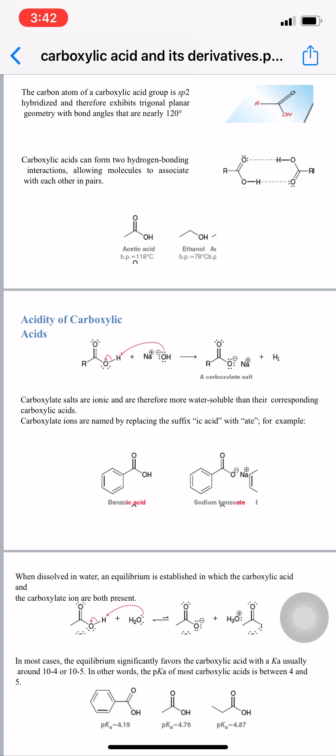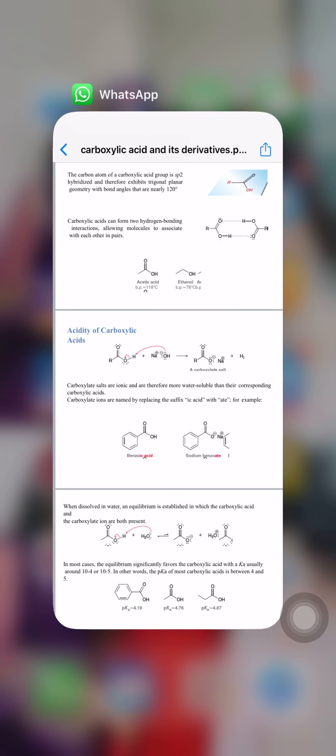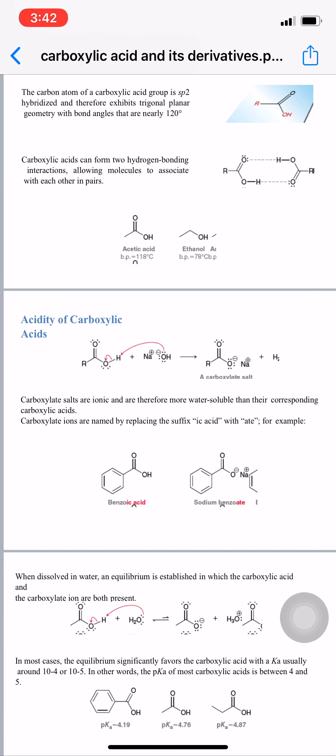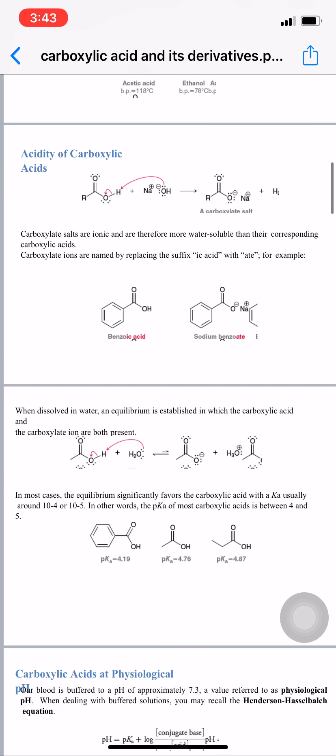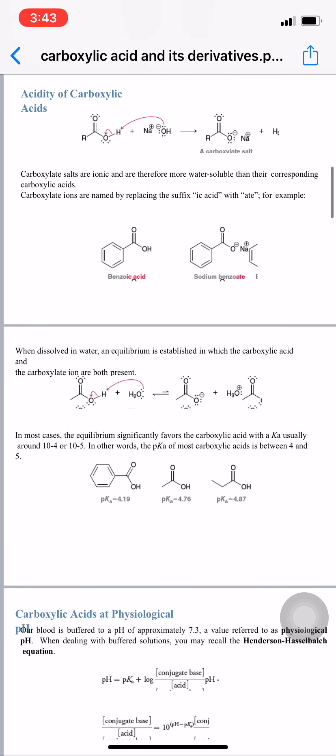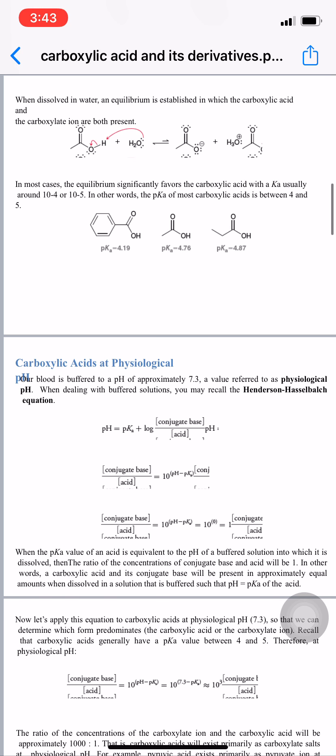When this salt dissolves in water, an equilibrium is established in which both the carboxylic acid and the carboxylate ion are present. At physiologic pH, most carboxylic acids have pKa values between 4 and 5.